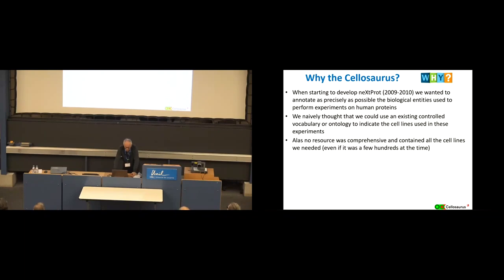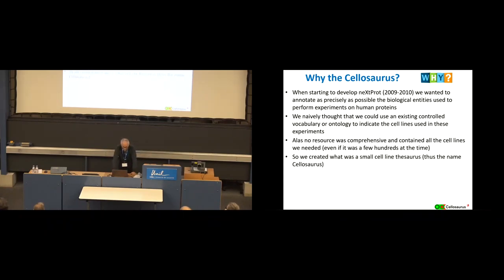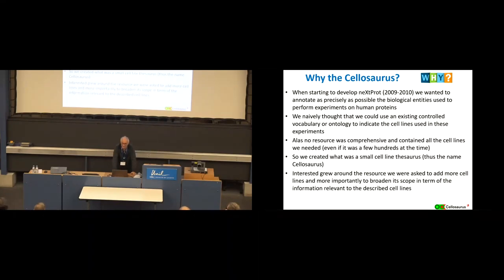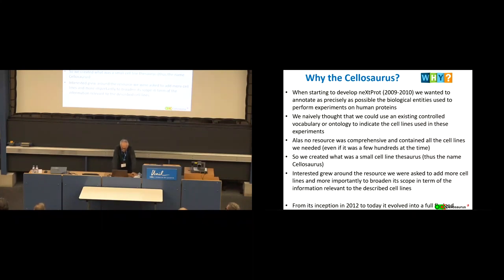We naively thought we could use an existing database of cell lines, but the problem was that basically there was no comprehensive resource at that time - at the end of 2010 - that had all the cell lines we needed. Even though we needed only 300 cell lines to annotate at that point, which is a tiny number compared to what exists, we created what was a small cell line thesaurus - just a list of cell lines. That's why it's called Cellosaurus: cell line thesaurus. Now it's no longer a thesaurus; people became interested and asked to add cell lines from ATCC, DSMZ, and various papers. It grew and grew into an encyclopedia of cell lines, starting in 2012.